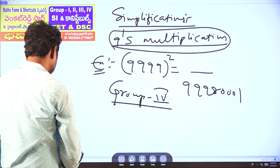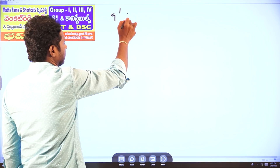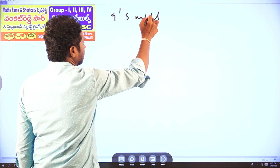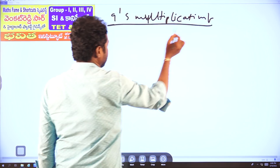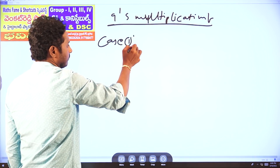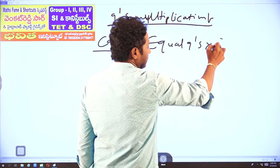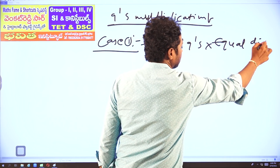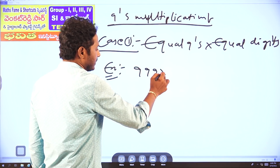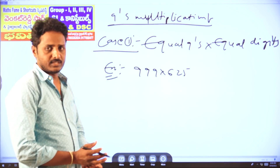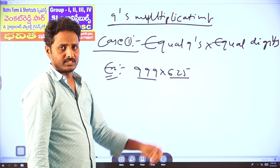First, we have a question. For 9s multiplication, we make 3 models. These 3 models cover 3 cases. Case 1: equal 9s into equal digits.